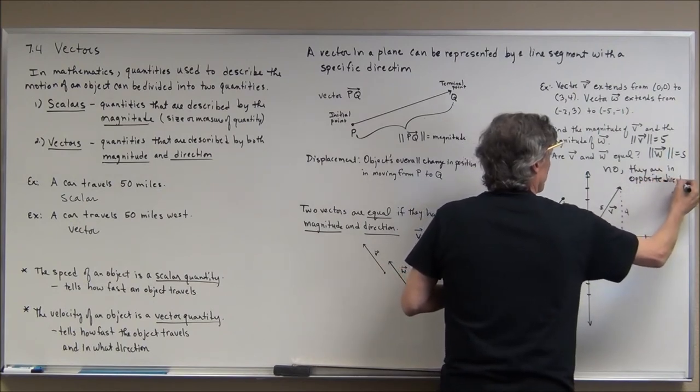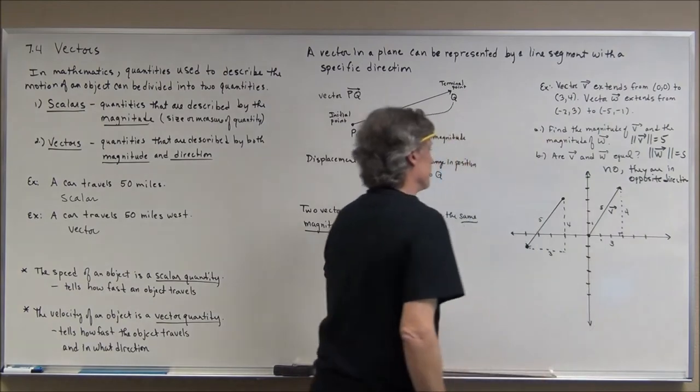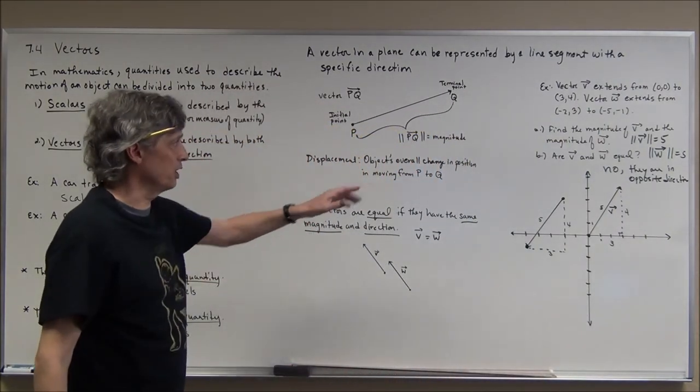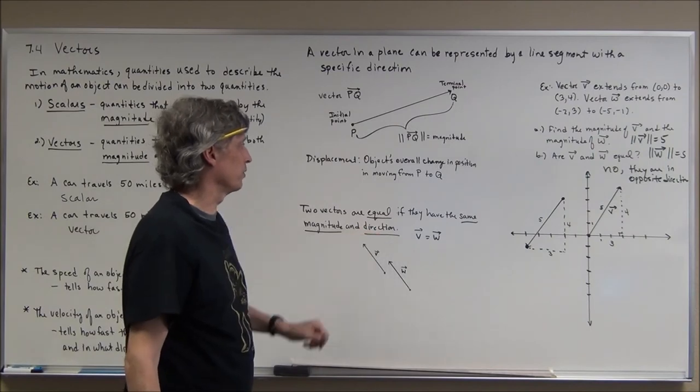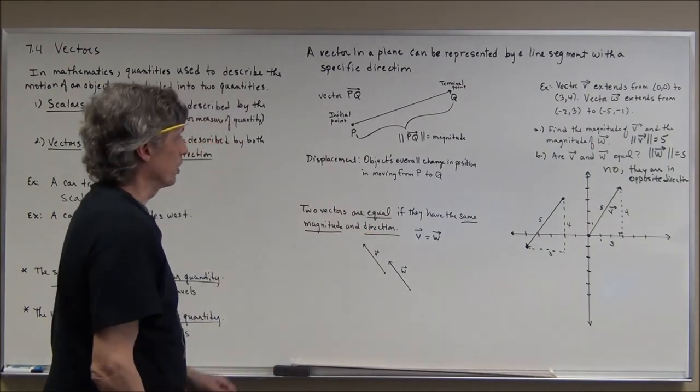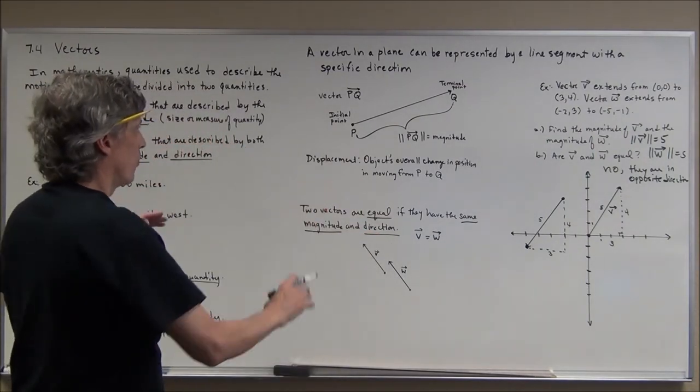Remember, two vectors are equal if they have the same magnitude, which they did, but they also have to have the same direction, which they don't. So we're going to extend on this - there's much more to go with vectors.